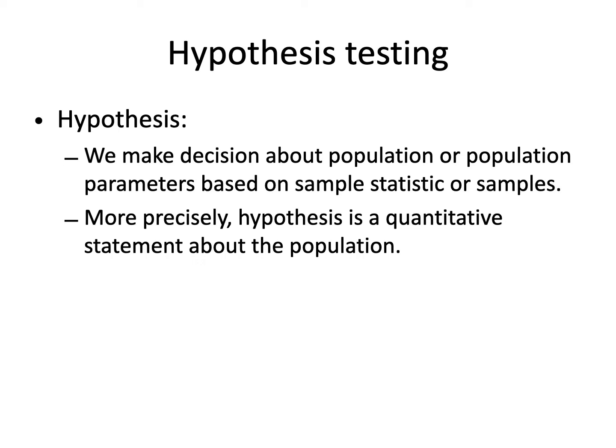Welcome back. We'll be discussing hypothesis testing in detail. We make a decision about a population or population parameters based on sample statistics. Whenever we make a decision about the population parameter, we make an assumption about it, and this assumption is known as the statistical hypothesis. In other words, we make a claim about the population parameters — more precisely, a quantitative statement about the population. For example, the average weight of students in a chosen university is 65. Once we make a claim or statement, we have to check its validity through the hypothesis test.